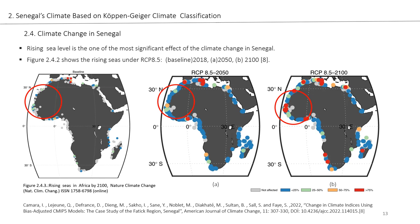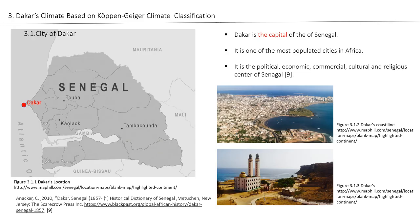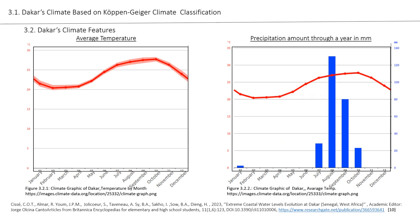Now I will give some information about Dakar's architecture based on the Köppen climate classification. Dakar is the capital of Senegal and one of the most populated cities in Africa. It has a coast on the Atlantic Ocean and is the political, economic, commercial, cultural, and religious center of Senegal. Looking at the graphics of Dakar's average temperature and precipitation through the year, the hottest month is October and the coldest is February. The highest precipitation is in August, and there is no precipitation from February to June.